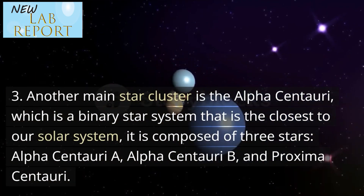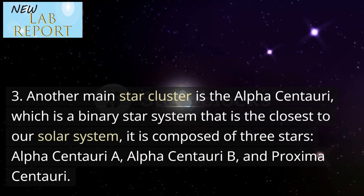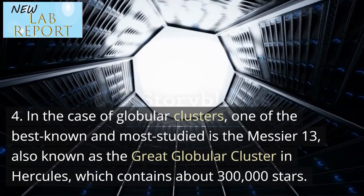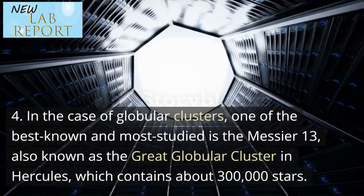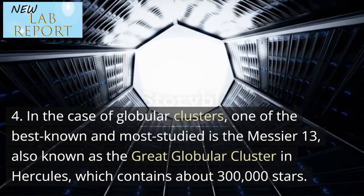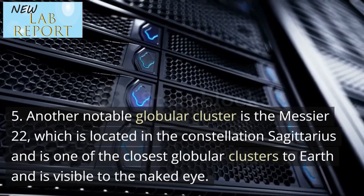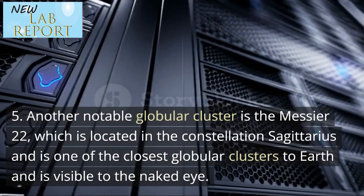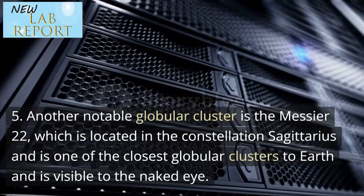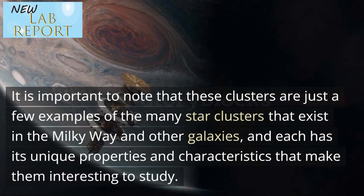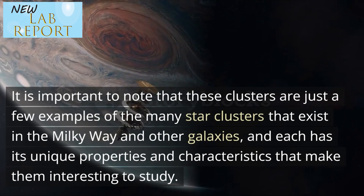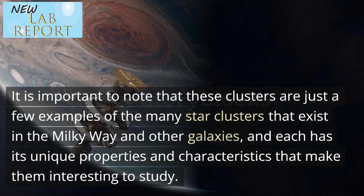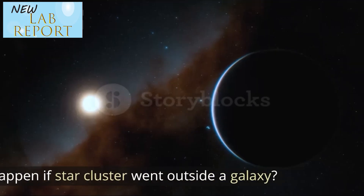Alpha Centauri is composed of three stars: Alpha Centauri A, Alpha Centauri B, and Proxima Centauri. In the case of globular clusters, one of the best known and most studied is Messier 13, also known as the Great Globular Cluster in Hercules, which contains about 300,000 stars. Another notable globular cluster is Messier 22, which is located in the constellation Sagittarius and is one of the closest globular clusters to Earth, visible to the naked eye. These clusters are just a few examples of the many star clusters that exist in the Milky Way and other galaxies, each with unique properties and characteristics.